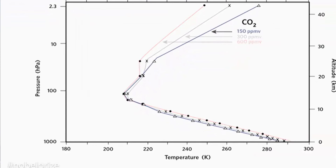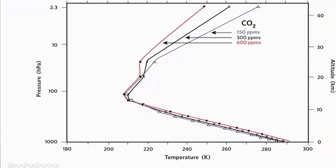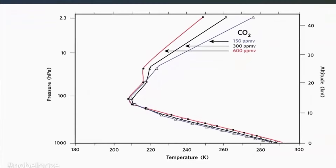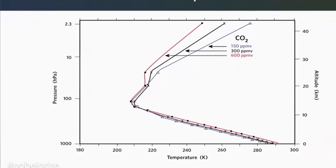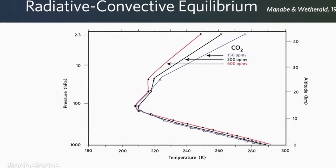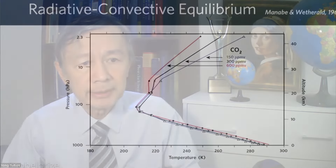Each graph was obtained using different CO2 concentrations, namely 150, 300, and 600 ppm, or parts per million. Obviously, noticeable cooling in the stratosphere was predicted. The higher the altitude, the lower the stratospheric temperature will be.